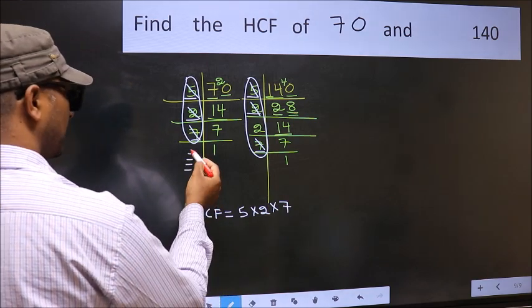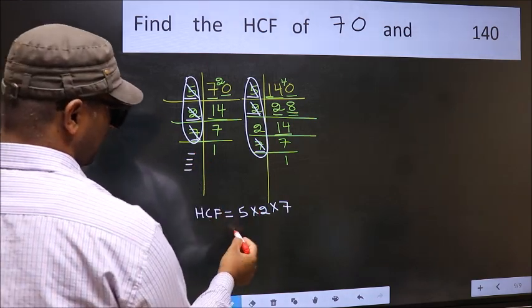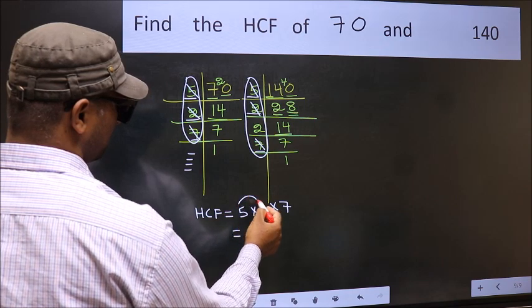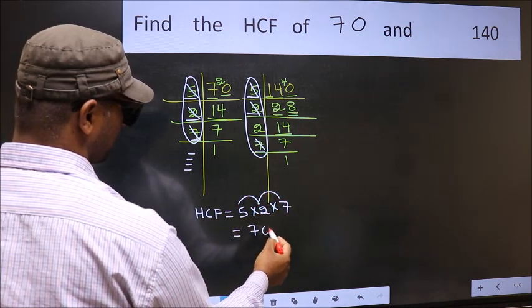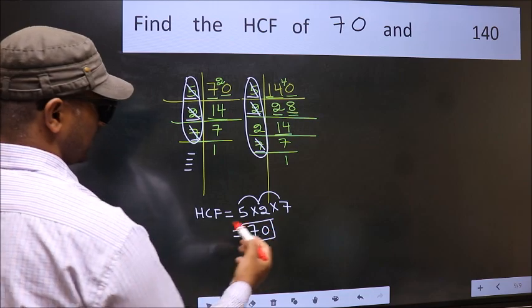No more numbers have been left out. So our HCF is 5 into 2, 10 into 7. 70 is our HCF.